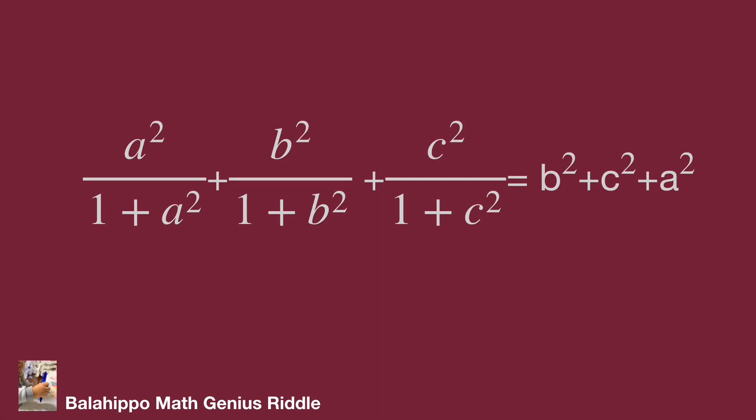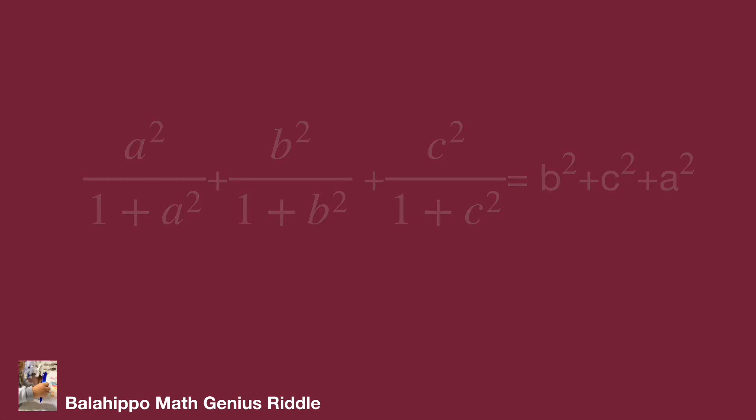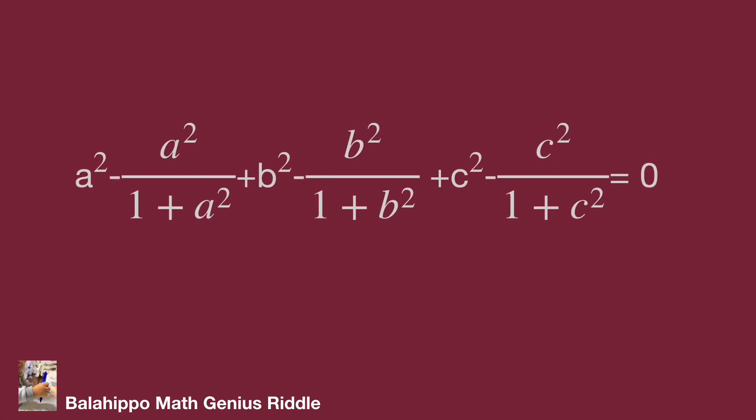Move the left side items to the right side of the equation and let a² minus a² over (1 + a²) as one group, b² minus b² over (1 + b²) as a second group, and c² minus c² over (1 + c²) as a third group.